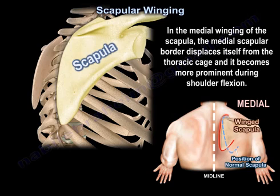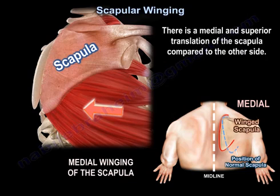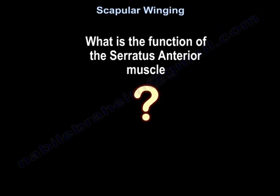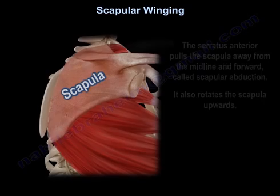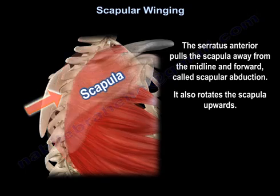In medial winging of the scapula, the medial scapular border displaces itself from the thoracic cage, and it becomes more prominent during shoulder flexion. There is a medial and superior translation of the scapula compared to the other side. The serratus anterior pulls the scapula away from the midline and forward, called scapular abduction. It also rotates the scapula upwards.